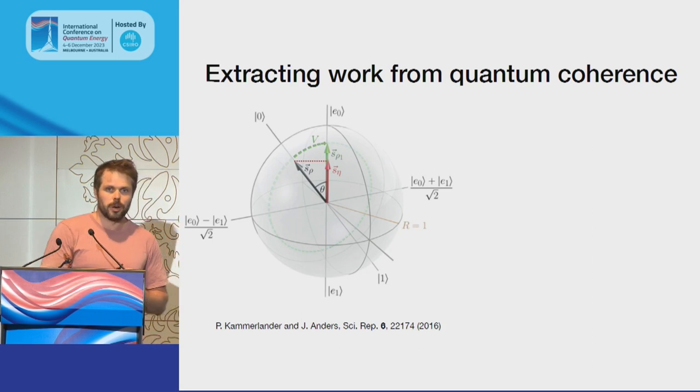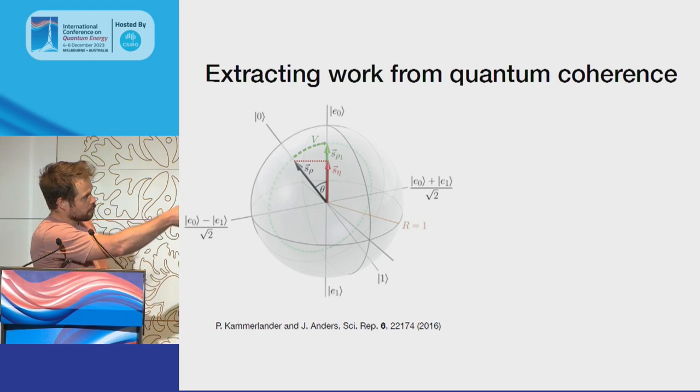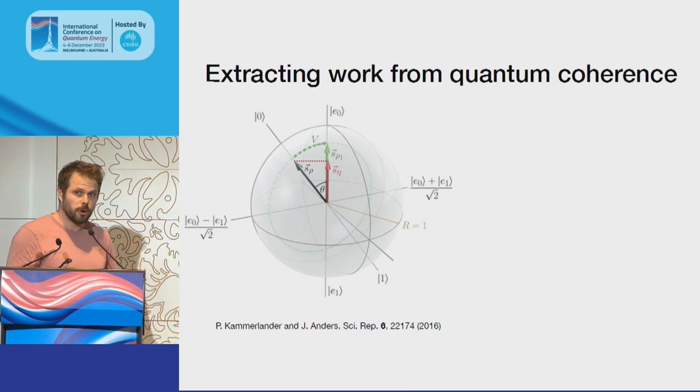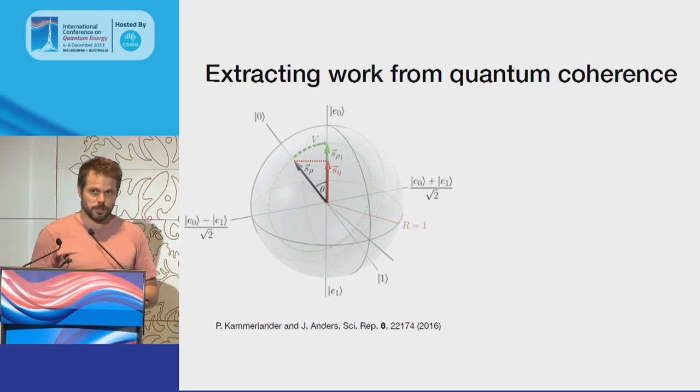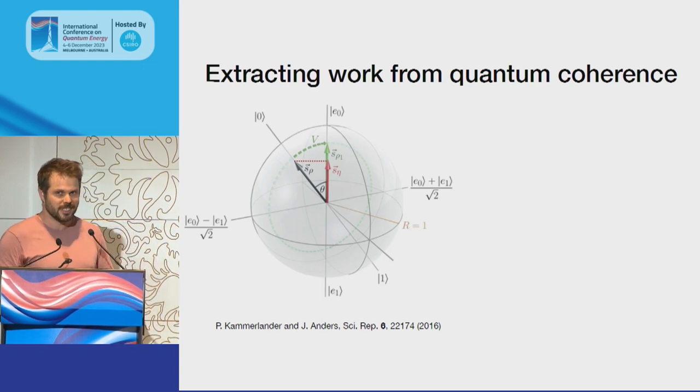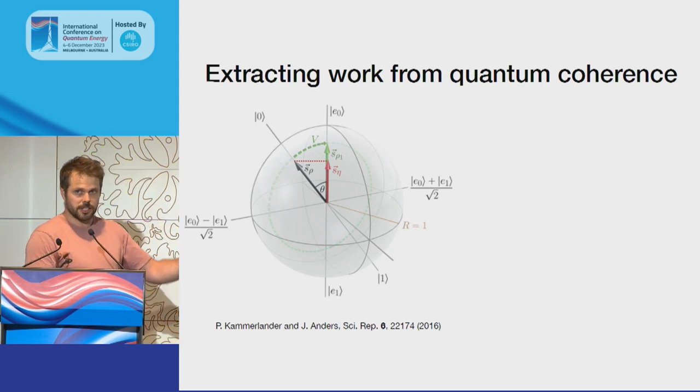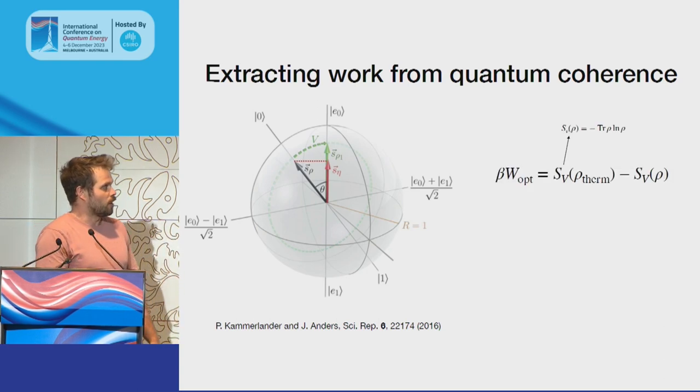We want to ask: how much work can we extract from that state in a process that converts it into the thermal state? Note that this black line, the state with coherence, has the same mean energy as the thermal state. Furthermore, if we measure the energy, the probability distribution would give the same result as well. So classically, with access to only energy measurements, they're indistinguishable. This distinction arises from quantum coherence—it's a fully quantum property. This paper gave a protocol showing the amount of work you can extract out, which perhaps isn't too surprising in retrospect, but it was a debated question.